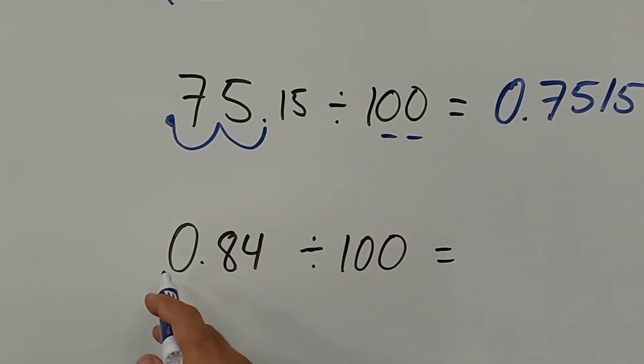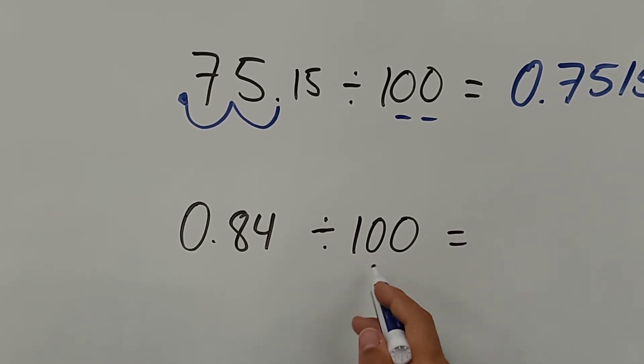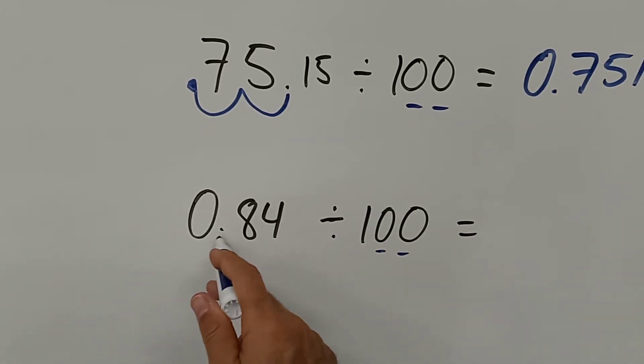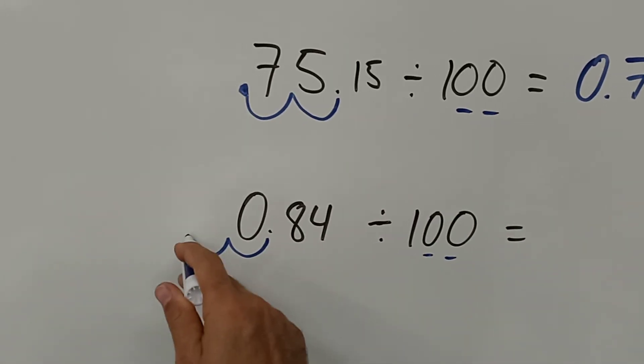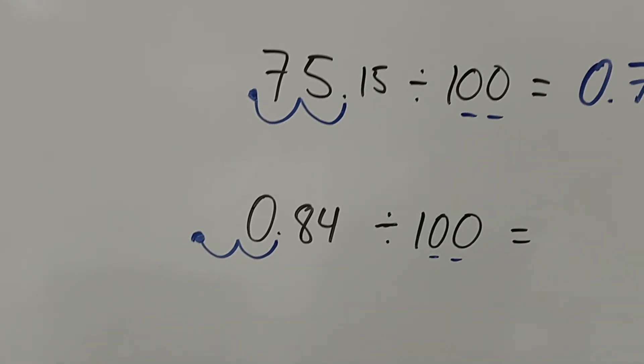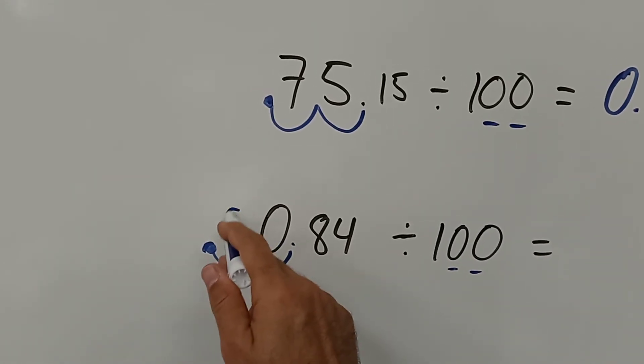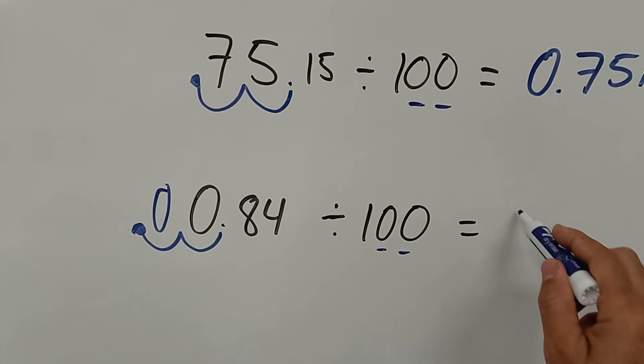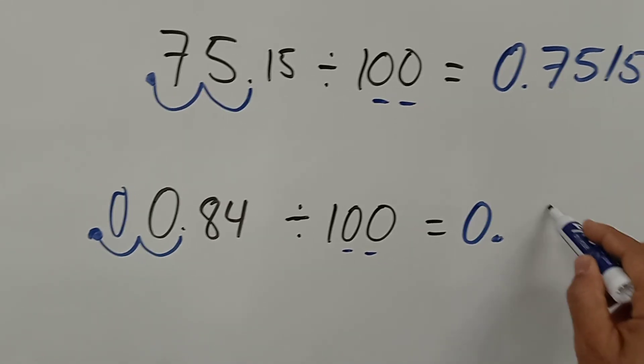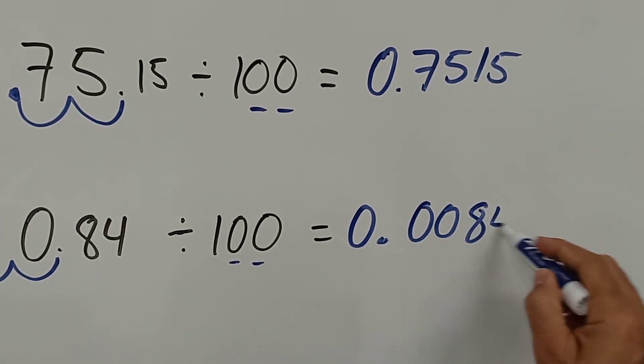And this one on the bottom, even if it's a decimal, you can divide it by 100. You have two zeros, you move the point two spaces: one, two. The point will stay here and if there is nothing here, you put a zero. So the answer would be 0.0084.